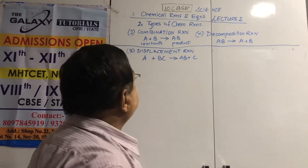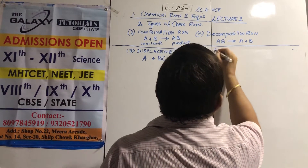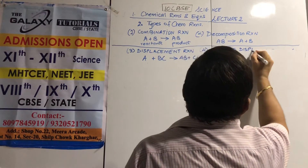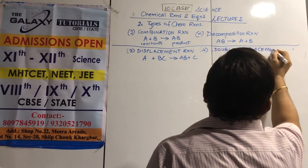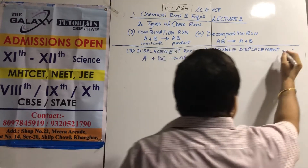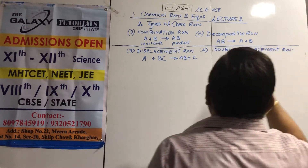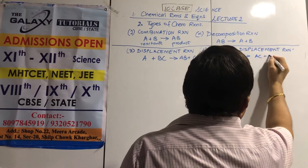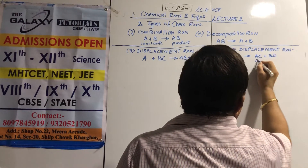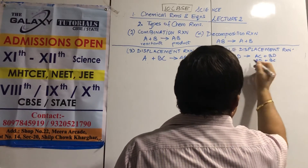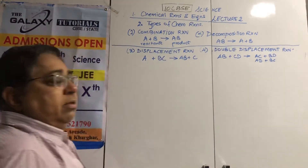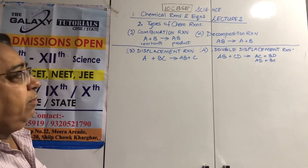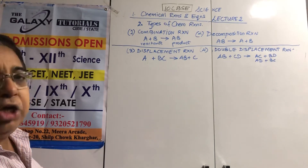Now type 4: double displacement reaction. In this, AB plus CD gives AC plus BD — you can also write AD plus BC, order is not important. We change the partners: a metal ion and a non-metal ion or positive and negative ions are interchanged.